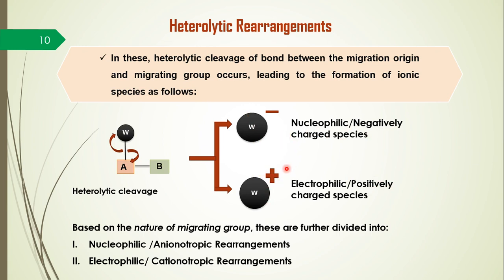Based on the nature of the migrating group after cleavage, heterolytic rearrangements are further classified into two types: nucleophilic or anionotropic rearrangements, and electrophilic or cationotropic rearrangements. In nucleophilic or anionotropic rearrangements, the migrating group migrates as a nucleophile. In electrophilic or cationotropic rearrangements, the migrating group migrates as a positive charge.